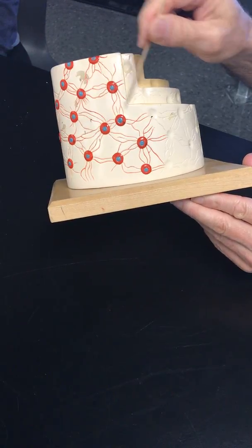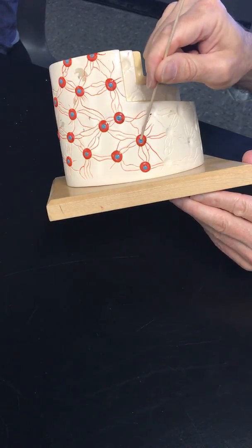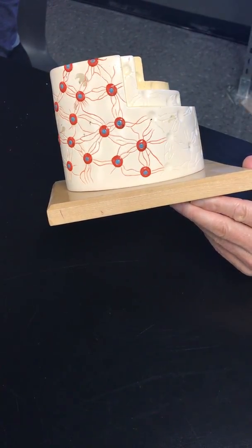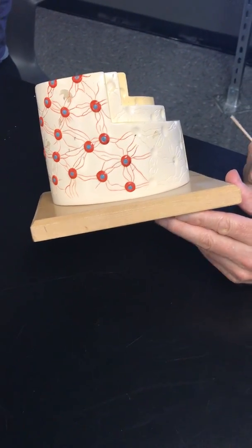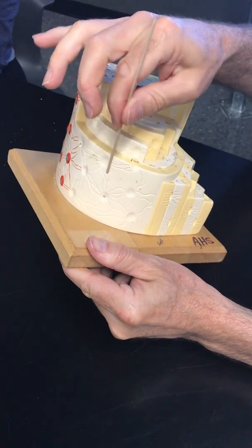Osteocytes, canaliculi, this is the cell, there's a blue nucleus and the cell around it. Here's some empty lacunae.